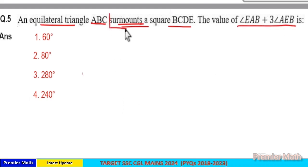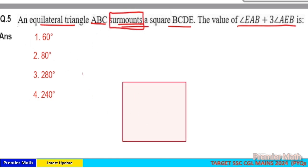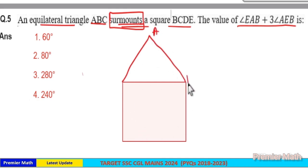The important word is 'surmounts.' Surmounts means on top of. The square has an equilateral triangle surmounting it, meaning the equilateral triangle is on top of the square. This is triangle ABC, and this is square BCDE.